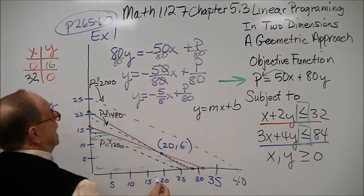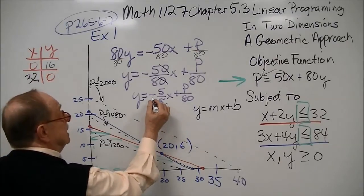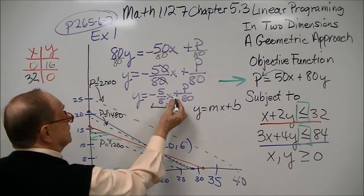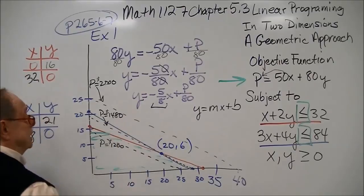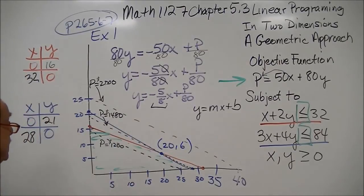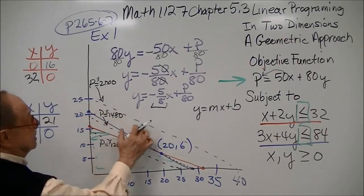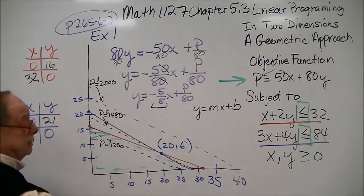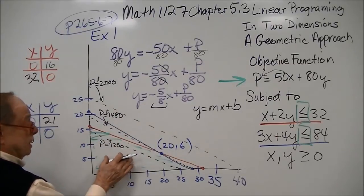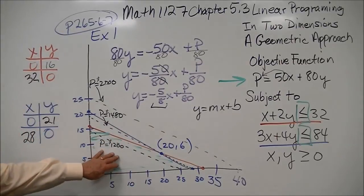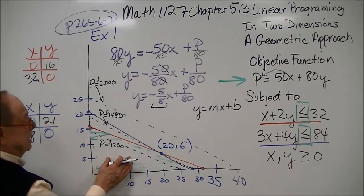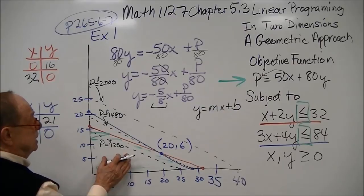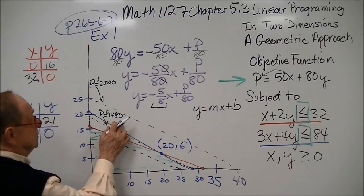I can just cancel out that, and I have now my slope is a negative 5 eighths x plus P over 80. So as I put a value in here, and the book does this for you, let's say of 2,000, you get this particular line. So this line is outside of your answer field here. The word they use for that is feasibility region.